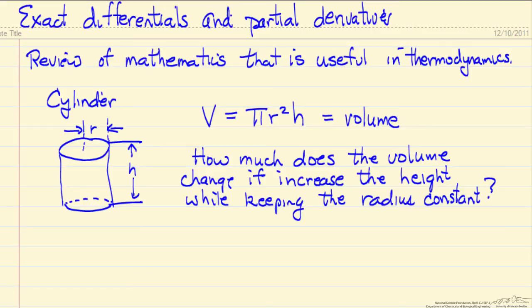Here we're going to review some of the mathematics that are important for thermodynamics, in particular looking at exact differentials and partial derivatives. To make this more concrete, let's look at an example where we have a cylinder — the radius is r, the height is h — and so the volume is πr²h, the area times the height.